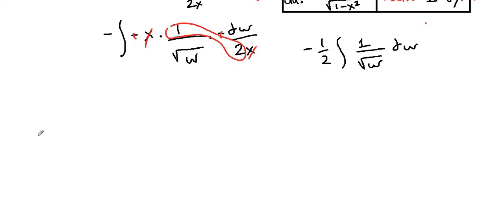Let's rewrite everything. We have x arccos of x minus one half integral of, instead of square root of w, we can write w to the one half, and we take it to the numerator as w to the negative one half dw.